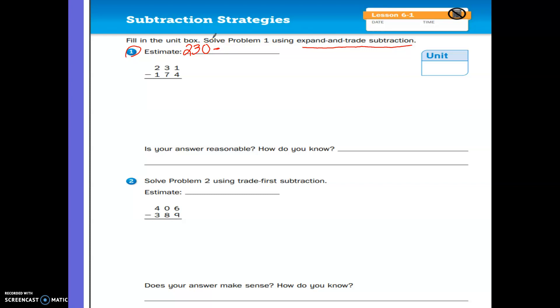I'm going to estimate that. I can do it two different ways. I can say, well, 231 is between 200 and 300, it's closer to 200. So I could use that as part of my estimate. Or I could say 231 is between 230 and 240, it's closer to 230, and I could use that. That's actually what I'm going to do. So I'm going to say 230 minus 174.